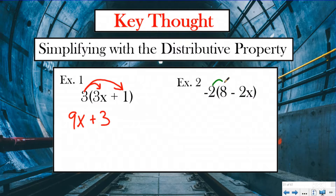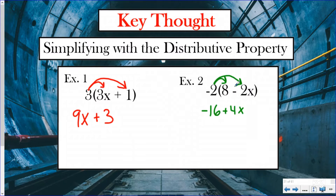Let's look at one more example. Here I have a negative two outside my parentheses. When I distribute my negative two, I'm going to be using my rules of negative numbers: negative two times eight is going to be negative 16. Then, rewriting the sign inside the parentheses — just like before — negative two times negative two is positive four, and then the variable is x. That is how we simplify with the distributive property.